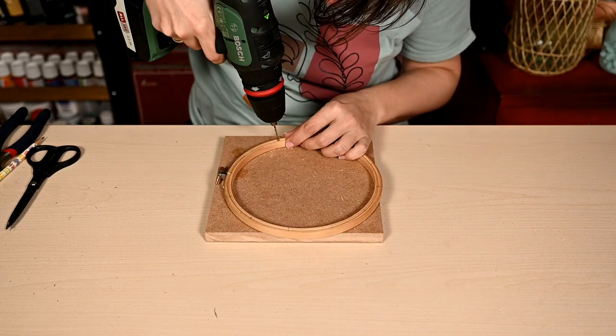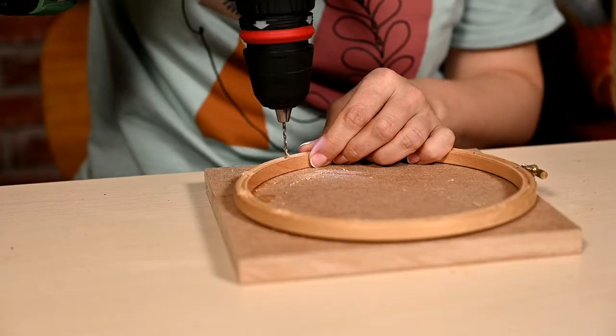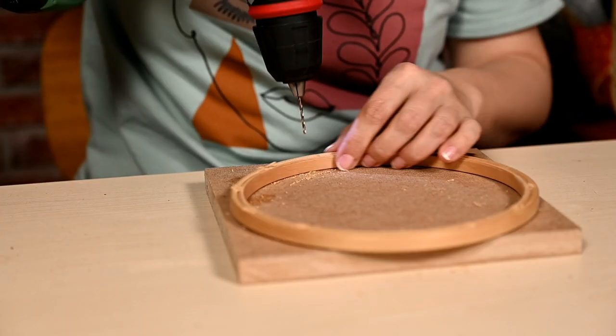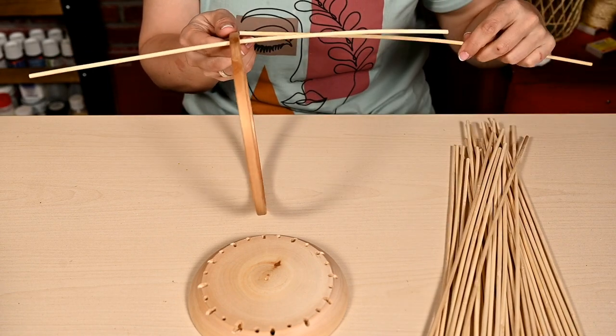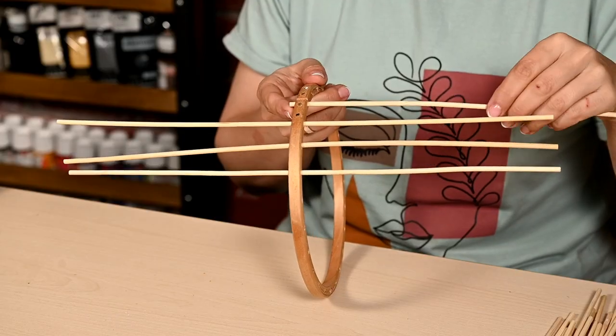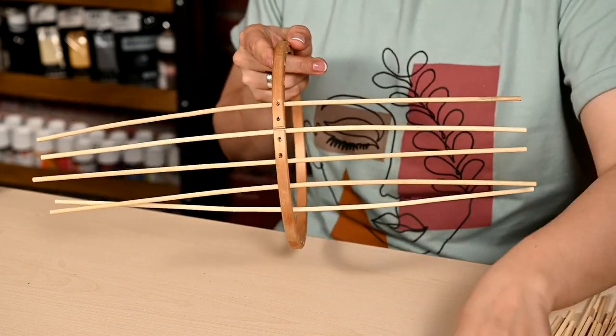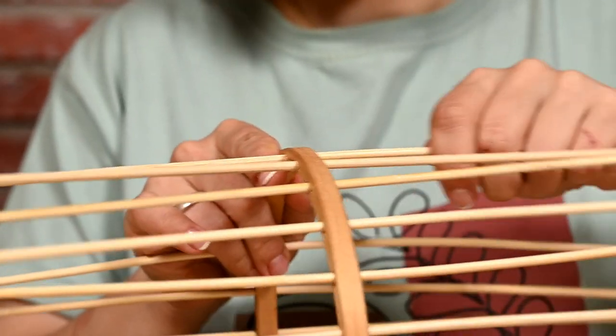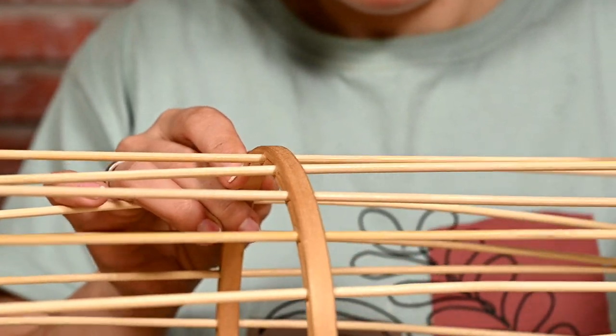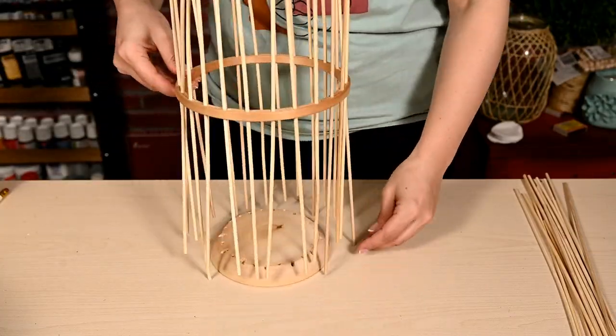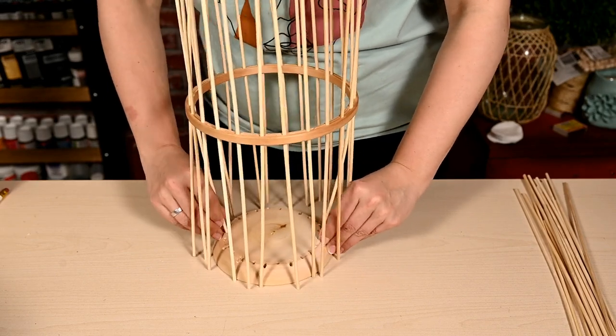After the glue has dried well, I'm also drilling the hoop around the entire circumference. In total I've made 24 holes for the sticks. After that I'm inserting the skewers into the hoop, placing the hoop approximately in the middle of each stick. By the way, these skewers are a little bigger than normal. Here where I live they're sold as plant supports.